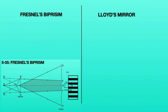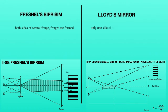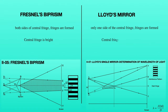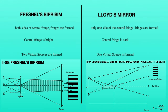Now we look at the differences between Fresnel's biprism and Lloyd's mirror. In Fresnel's biprism, fringes are formed on both sides of the central fringe — that is, on the entire region both above and below, we get interference fringes up to a certain range. But in Lloyd's mirror, fringes are formed on only one side of the central fringe. Furthermore, in Fresnel's biprism the central fringe is bright, whereas in Lloyd's mirror the central fringe is dark. Also, in Fresnel's biprism two virtual sources are formed, whereas in Lloyd's mirror only one virtual source is formed. These are the major differences between Fresnel's biprism and Lloyd's mirror.